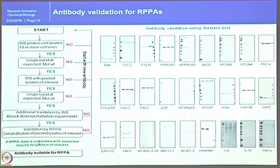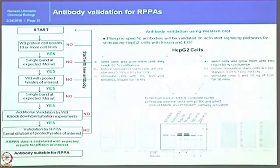If you have a single band at the first step, the antibody goes directly into the validation pipeline. Antibodies that show multiple non-specific bands are discarded at the first step — we don't spend any time and simply buy another antibody. Once we reach the single-band confirmation step, we need to follow additional validation steps.